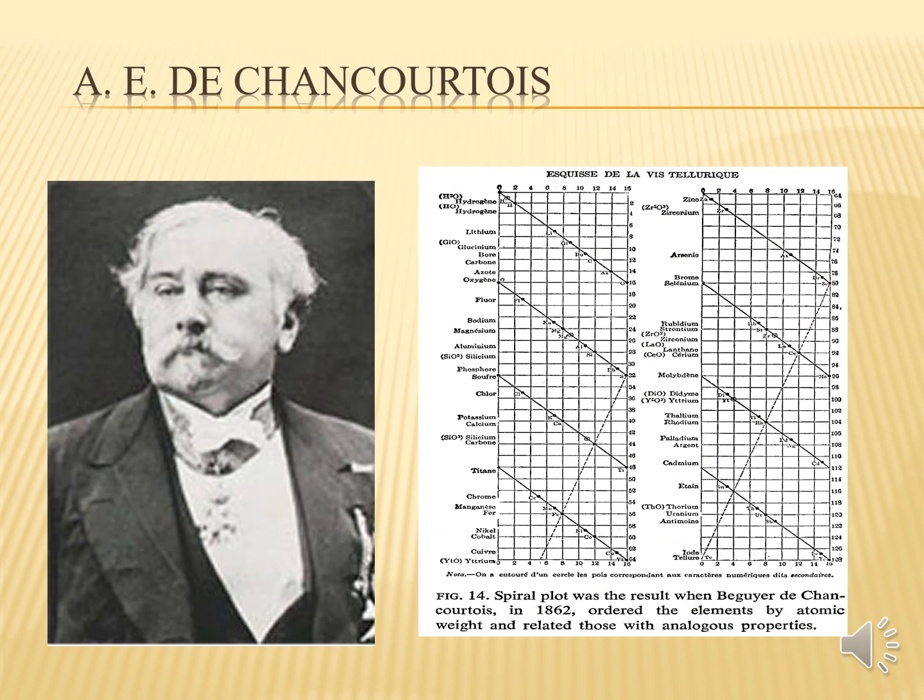The next contribution is important because it was the first attempt to arrange elements in some kind of pattern — a cylindrical pattern. This is the work of de Chancourtois, a French geologist and mineralogist. De Chancourtois created a system where he arranged the elements in a helix or screw-like pattern wrapped around a cylinder. This arrangement was based on atomic weight, with similar elements placed vertically along the helix — essentially the first kind of periodic table. However, his periodic table was complicated and difficult to understand, so it did not gain much recognition.